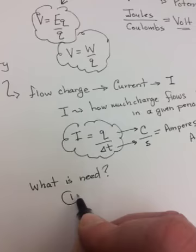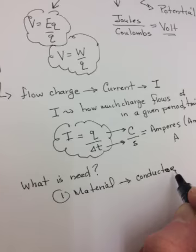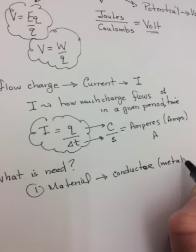Three things that are needed to make charge flow. One is a material through which it will flow. And we usually call that a conductor. You don't tend to try to create a circuit with, like, plastic. You would use probably copper or some kind of wire. Metals are the best conductors. Okay? So one thing you need to make charge flow is a good material.